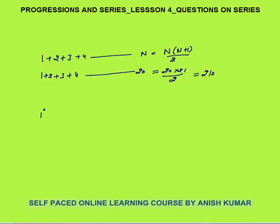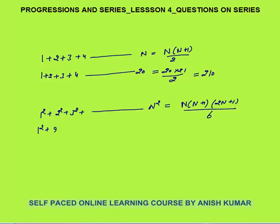The second series is the sum of squares of n natural numbers: 1² plus 2² plus 3² up to n². The sum of squares of first n natural numbers is n into n plus 1 into 2n plus 1 by 6. For example, if you want to calculate the sum of squares of first 15 natural numbers, the answer would be 15 into 16 into 31 by 6.